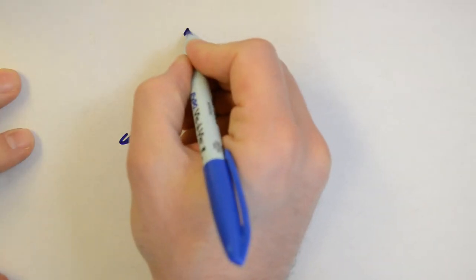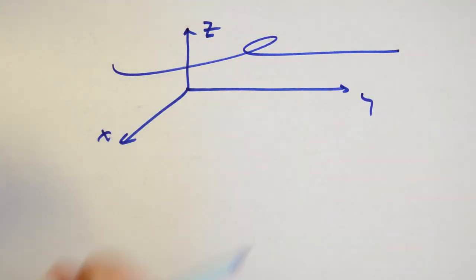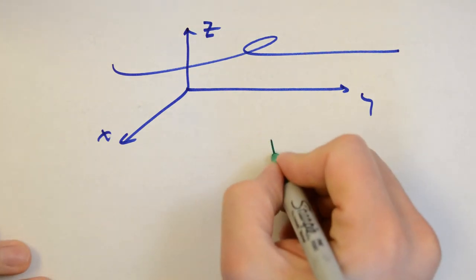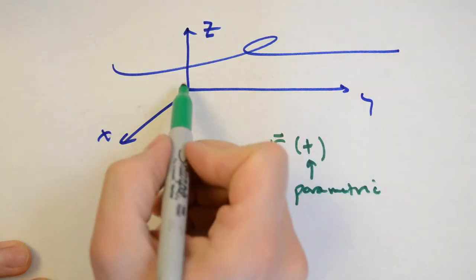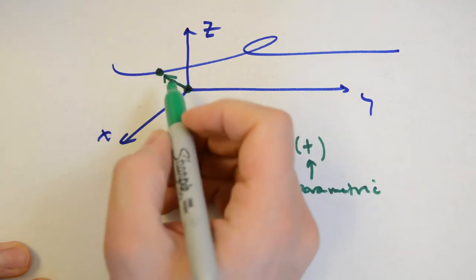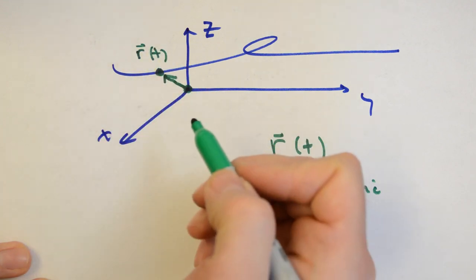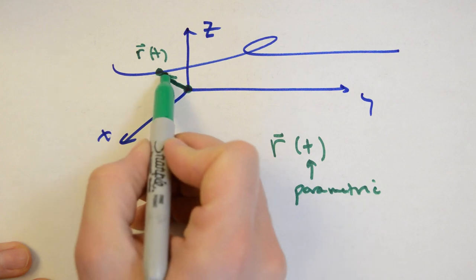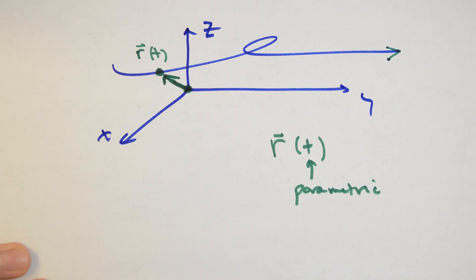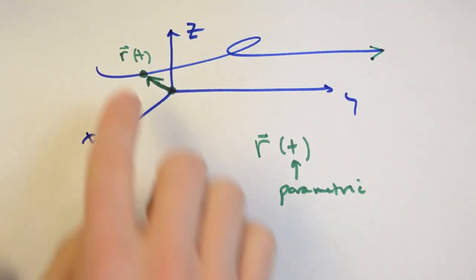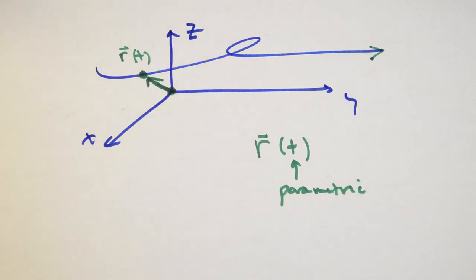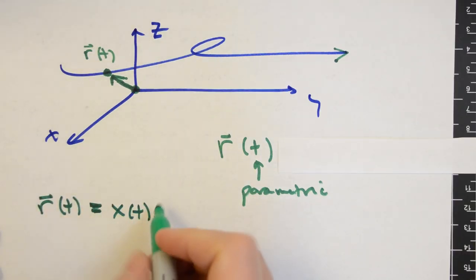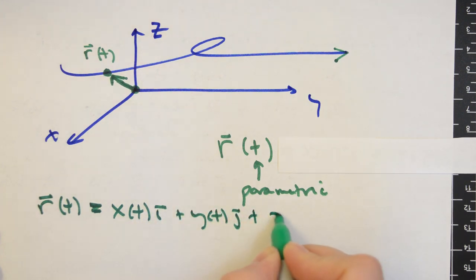Let's get started. In vector calculus, a very useful way to describe a three-dimensional curve is by treating it as a vector value function R of t in terms of a parametric coordinate in time. This type of description uses the vector in standard position pointing at a point along the curve at a specified time. Our vector value function will take on the form x(t)i plus y(t)j plus z(t)k.